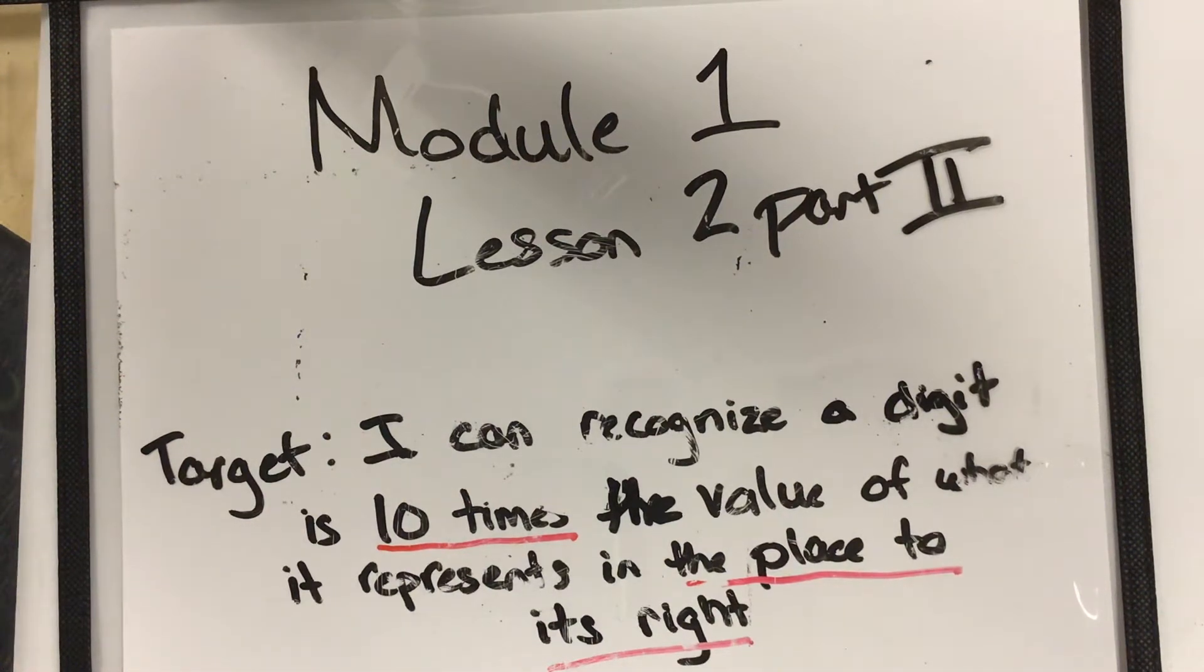Hi, fourth graders. Today we're going to learn the second part of our second lesson on module one, and our target is still going to be the same thing: I can recognize a digit is 10 times the value of what it represents in the place to its right. But today we're going to be doing something a little bit different.